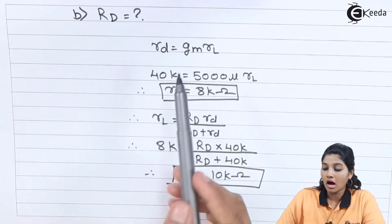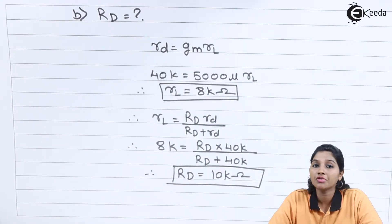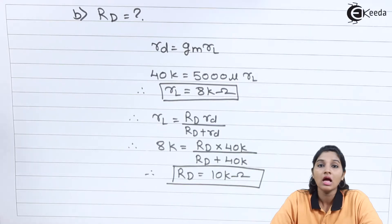Therefore we will get drain resistance of FET, RD is equal to 10 kilo ohms. So by using the various values of GM, RD, Rl we can find out the drain resistance of FET and frequency of oscillation, that means F0.